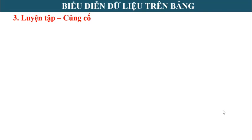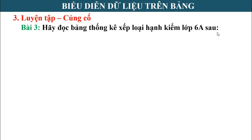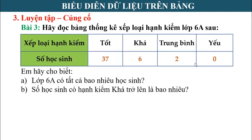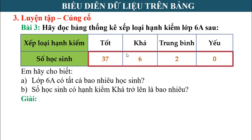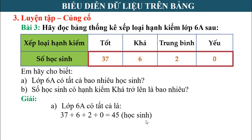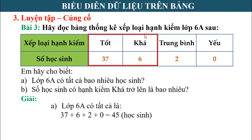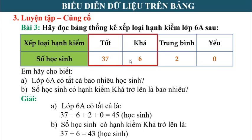Bài tập 3: Đọc bảng thống kê xếp loại hạnh kiểm lớp 6A và cho biết lớp 6A có tất cả bao nhiêu học sinh, số học sinh có hạnh kiểm khá trở lên là bao nhiêu. Bảng gồm 2 dữ kiện: loại hạnh kiểm và số học sinh. Tổng số học sinh lớp 6A là 37 + 6 + 2 + 0 = 45 học sinh. Số học sinh có hạnh kiểm khá trở lên gồm hạnh kiểm tốt và khá: 37 + 6 = 43 học sinh.